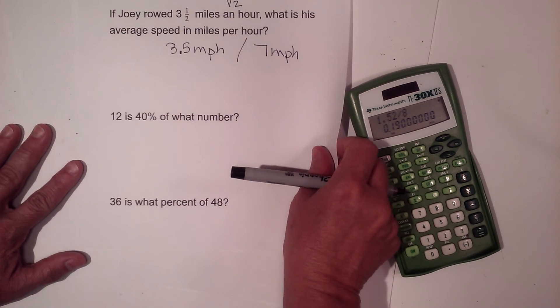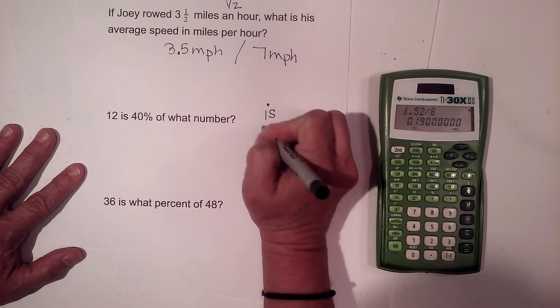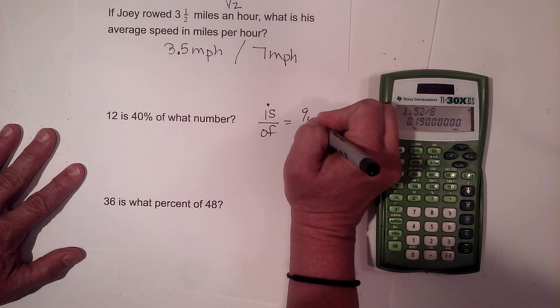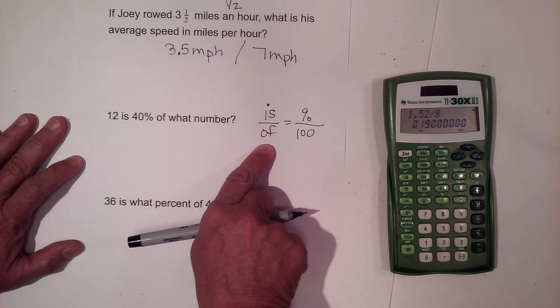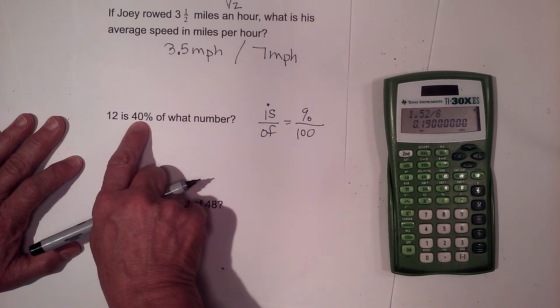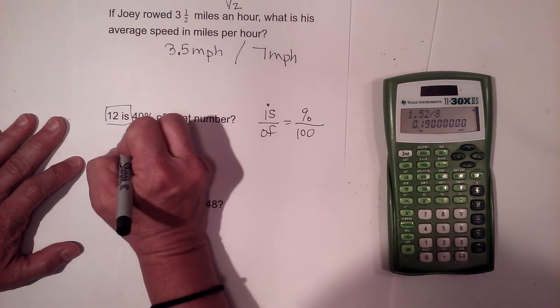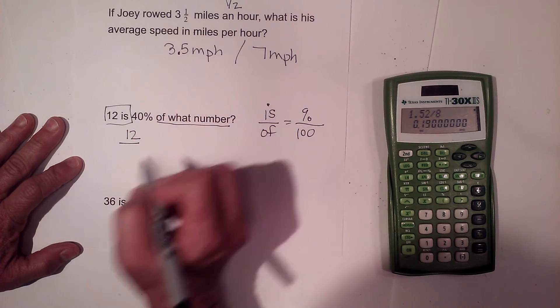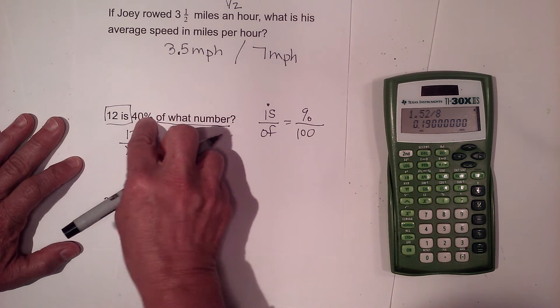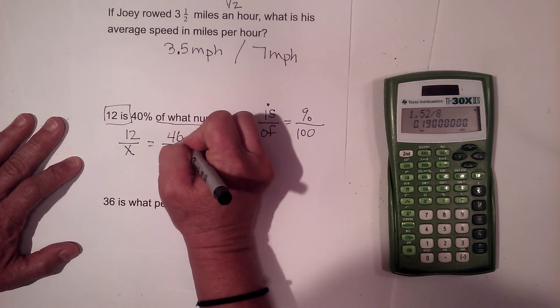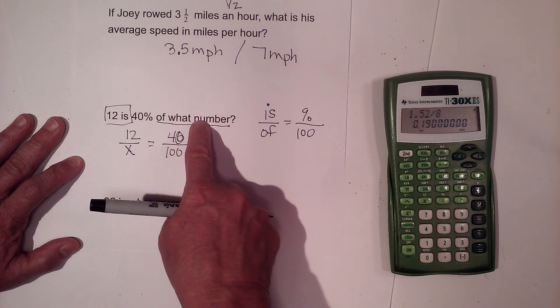Now let's look at some percent problems. Percent problems, I kind of stick with the same format. I like to use is over of equals percent over 100. And if you set up all of your proportions like this, then you can use the cross product method and solve it. So 12 is 40% of what number? So 12 is the is part.